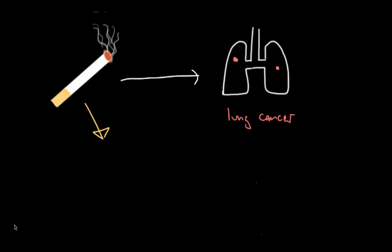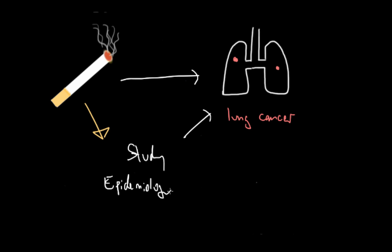The way you'd do that is using a study. A study is what links your hypothesis — that smoking cigarettes increases lung cancer — with actual data to prove it. Because this deals with a major determinant of health and the frequency of disease in the population, it falls under the field of epidemiology. This was done for the first time in 1956 with the British Doctors Study, which definitively linked smoking cigarettes with an increased risk of lung cancer.